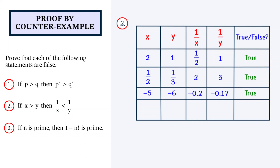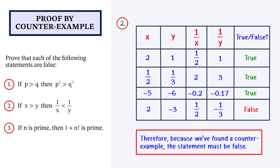We could now try a positive and a negative number. Let x be equal to 2 and y be equal to minus 3. So 1 over x is a half and 1 over y is minus a third. This is false because although 2 is greater than minus 3, a half is not less than minus a third. Therefore, because we found a counterexample, the statement must be false.